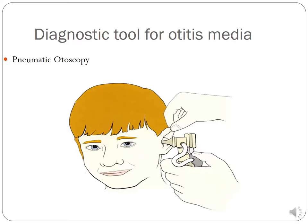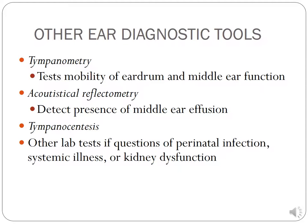Pneumatic otoscopy is essential for checking the mobility of the eardrum, giving lots of information about otitis media and whether there's an effusion. Other diagnostic tools include tympanometry to test for mobility and acoustic reflectometry to detect middle ear effusion. ENT clinics frequently perform tympanocentesis to take fluid out for chronic ear infections. Additional tests may be ordered if there's any question of perinatal infection, systemic illness, or kidney dysfunction.